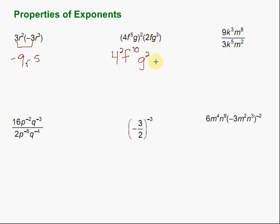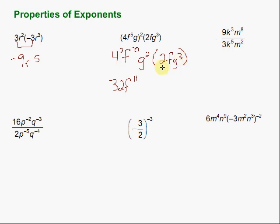We can bring along the rest of that expression. Let's write that down and see if we can do any more combining of terms. We've got some f's here and some f's to combine. We have f to the tenth being multiplied by f to the first, so we add the exponents: 10 plus 1 gives us f to the eleventh. We can also handle the constant terms: 4 squared is 16, and 16 times 2 is 32. Finally, we look at the g terms: g squared times g to the third — we add those exponents — and we're left with g to the fifth.